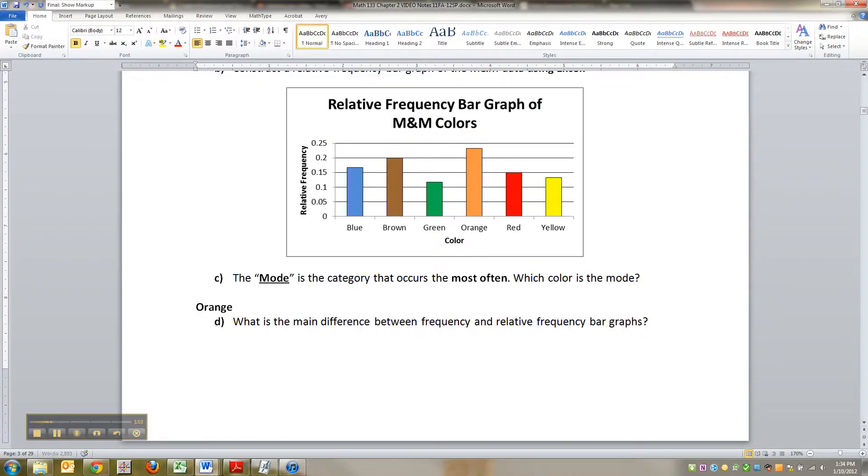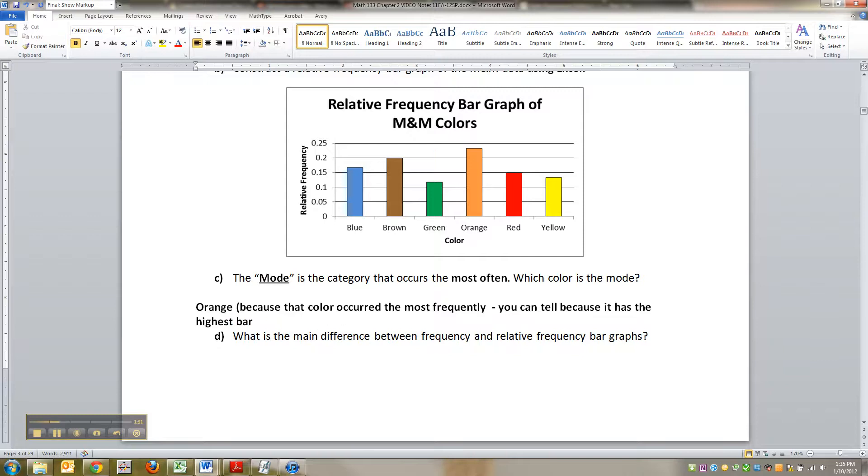So orange, because that color occurred the most frequently. You can tell because it has the highest bar in the graphs.